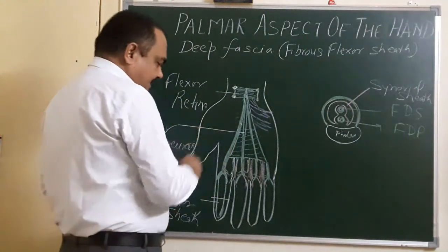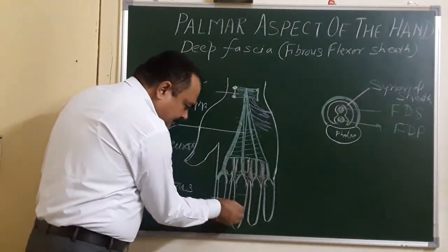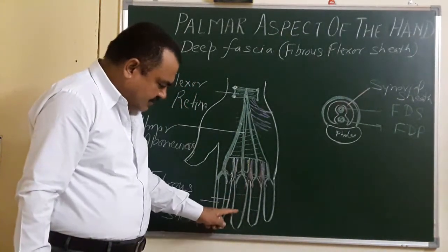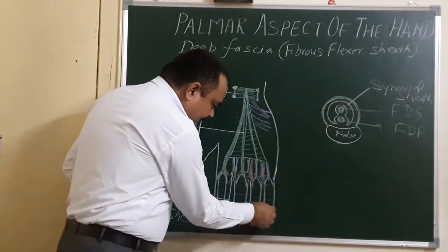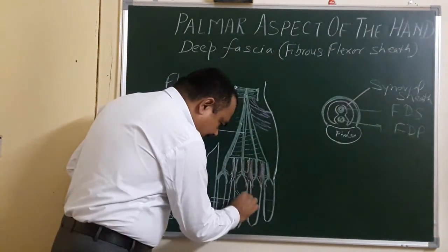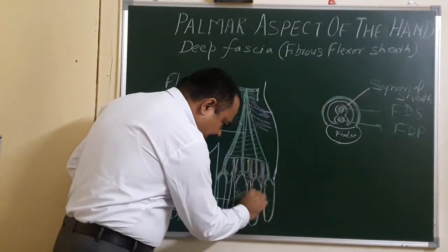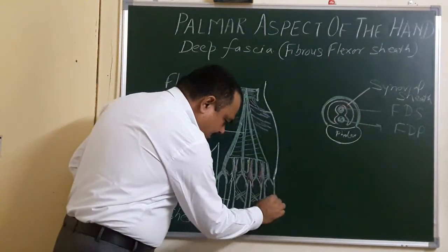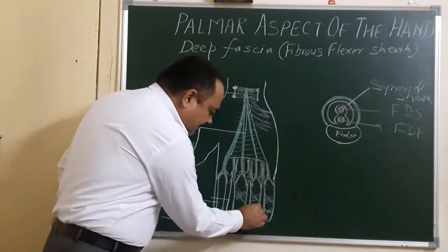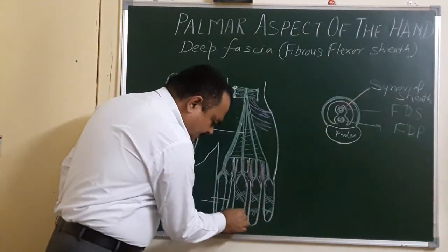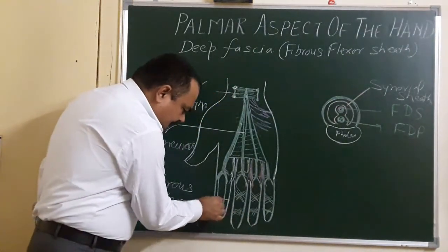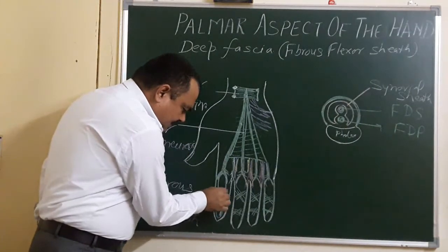The arrangement of the fibers at the level of the interphalangeal joint is cross-like — a cruciate arrangement. At the level of the interphalangeal joint, the fibers form a thin layer in a cruciate arrangement.